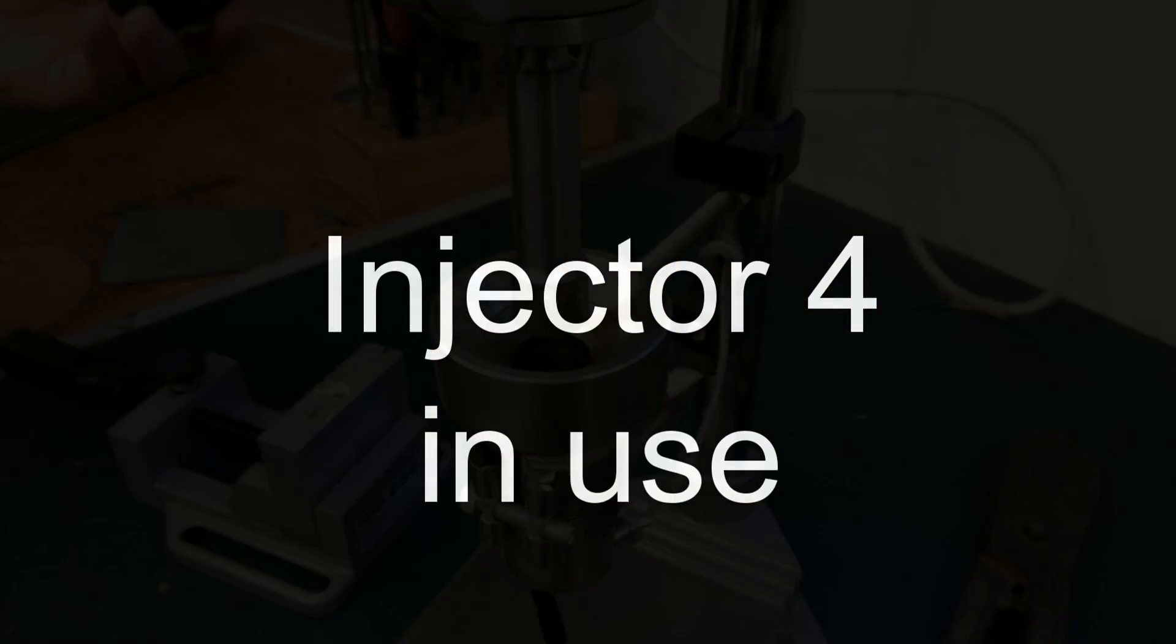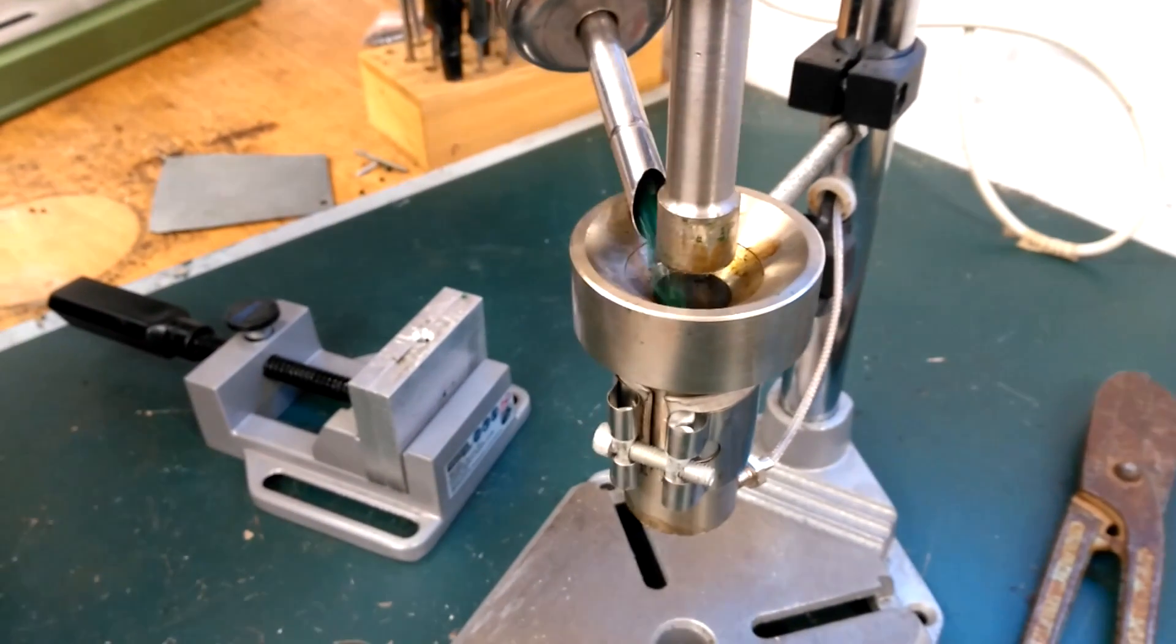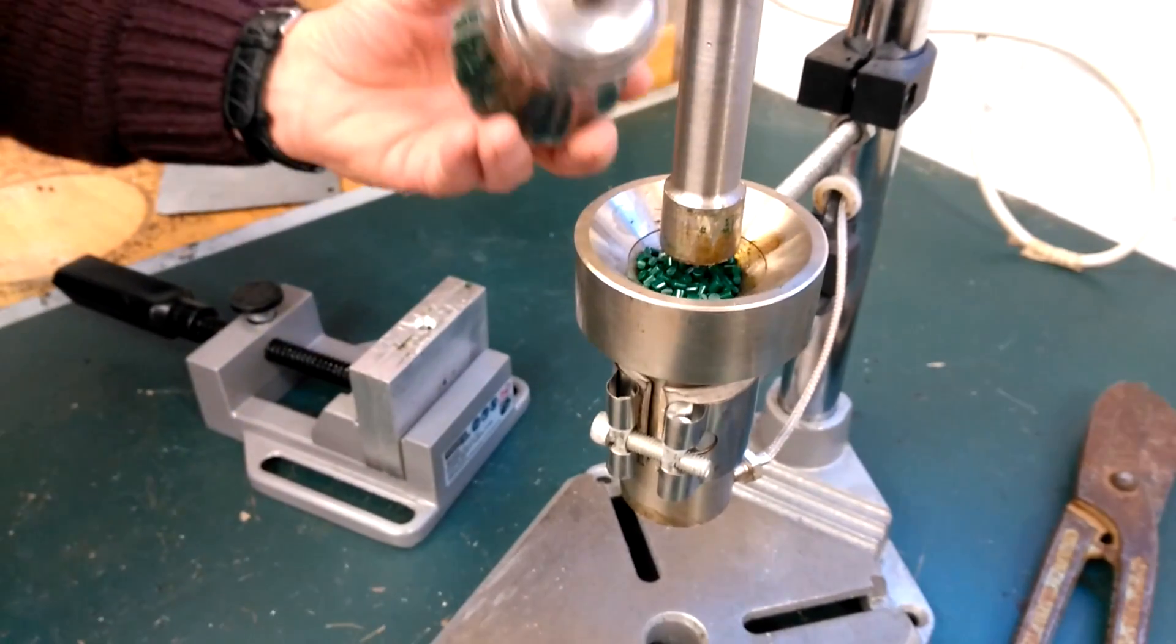Ok, let's have a look at the machine in action. The first thing to do is charge the machine with a dose of plastic pellets. We're using a sugar dispenser for that job.